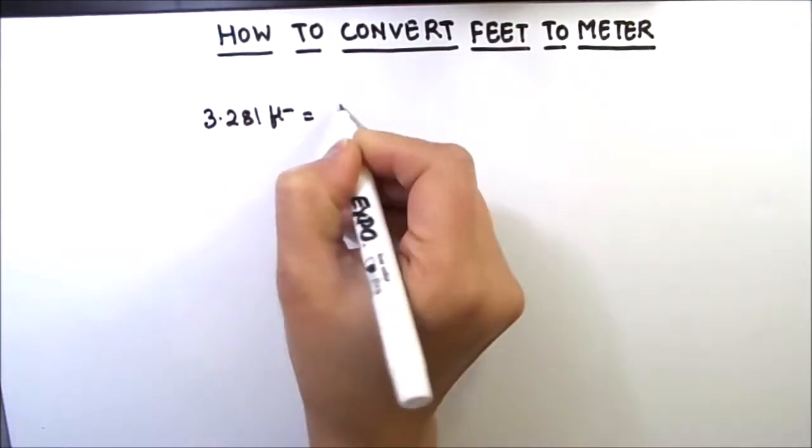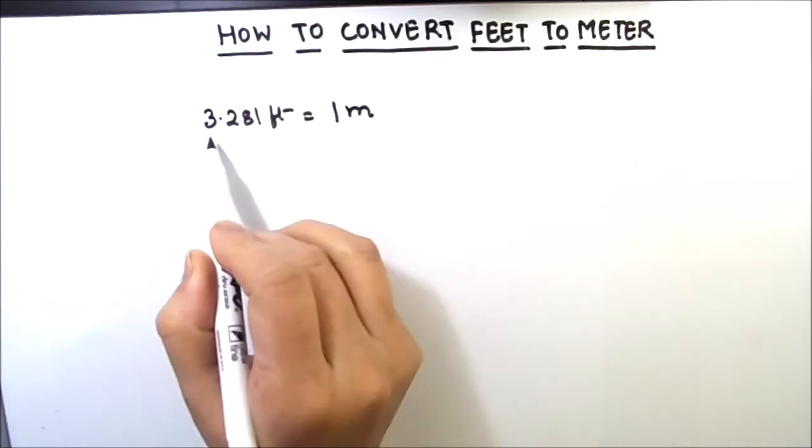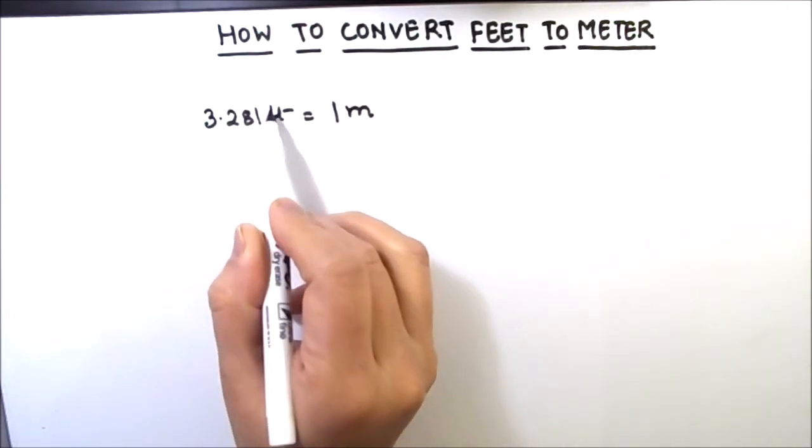But here we are converting from feet to meter, so we should know how much is 1 foot. For that, we are going to divide both sides by 3.281 so that we are going to get 1 foot.